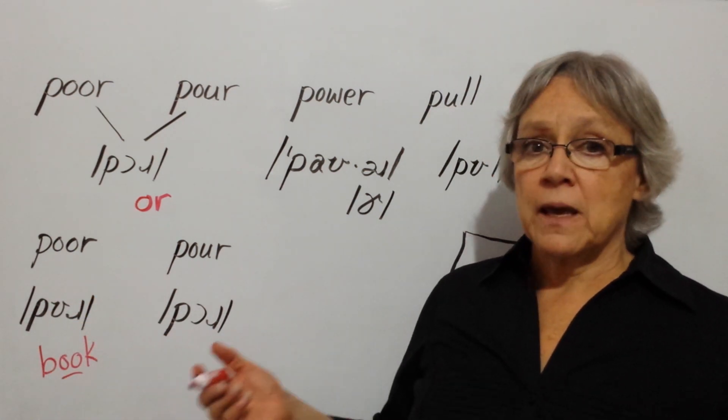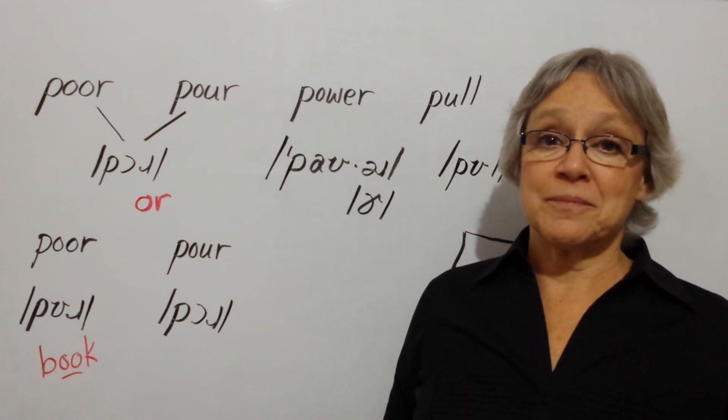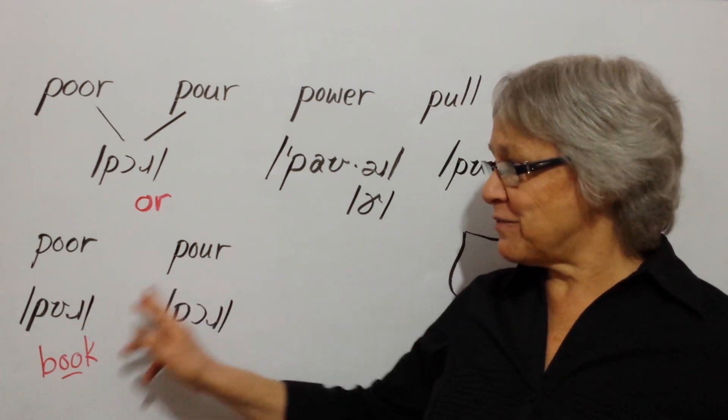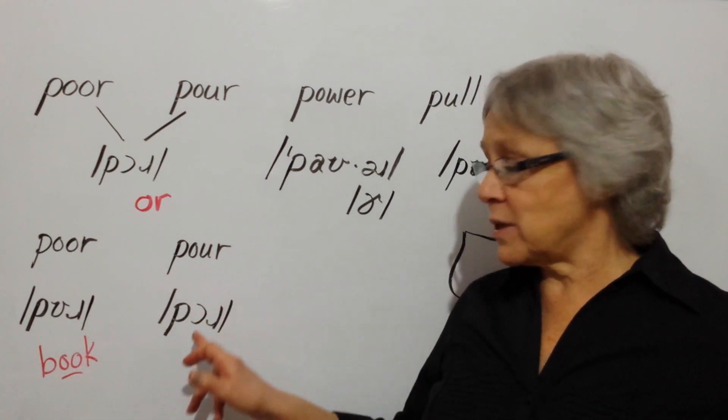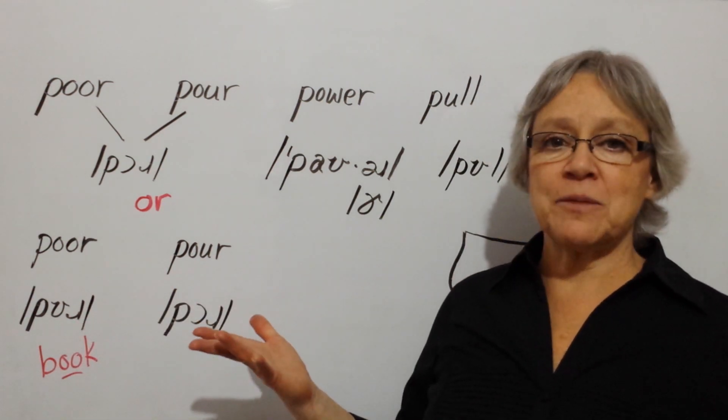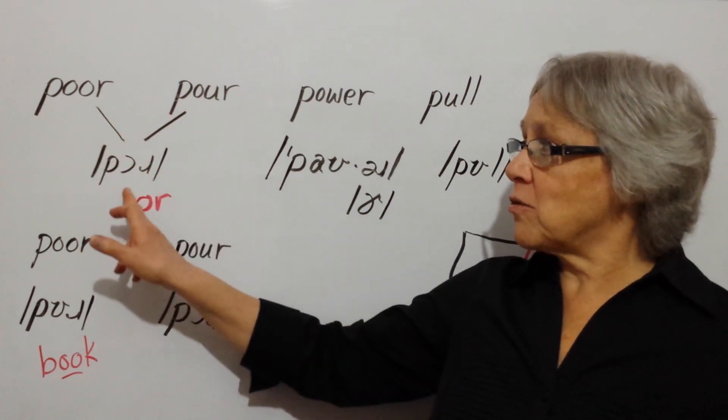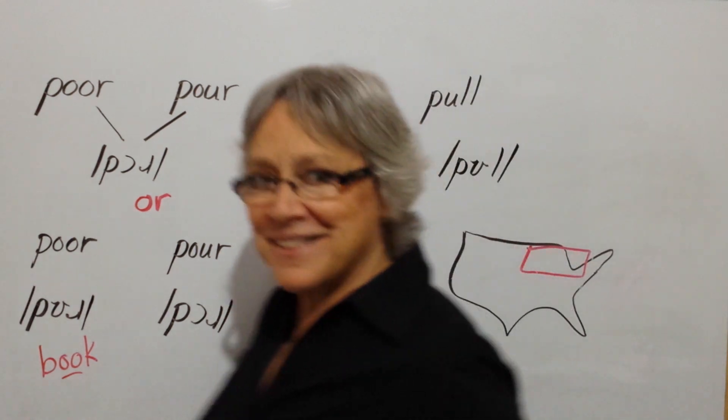So, in some parts of the United States, people do pronounce these differently. You can pronounce them whichever way you want. If you want to pronounce them differently, as this one is poor, and this one is pour, that's fine. People will understand you. If you want to pronounce them the same, both as poor, that's fine too.